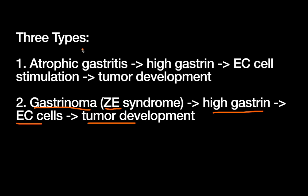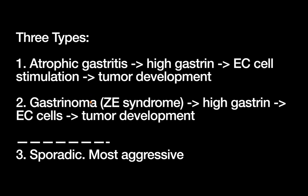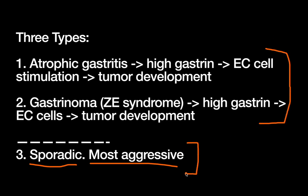Both types 1 and 2 are gastrin-driven and fairly indolent, as they are driven by factors outside the EC cells themselves. Type 3, on the other hand, is different — it's sporadic. Surgical oncologists refer to this as 'real cancer,' and it is by far the most aggressive. So to remember: types 1 and 2 are gastrin-driven and indolent; type 3 is sporadic and most aggressive.